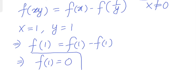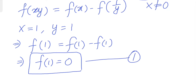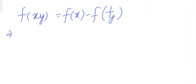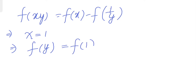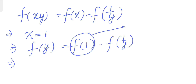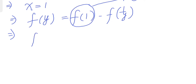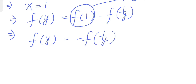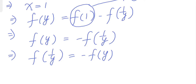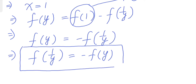This is very surprising — we may need this later, so let's call it equation 1. Now let's try something else: take only x equals 1 in the original equation. We get f of y equals f of 1 minus f of 1 over y. Since f of 1 equals 0, this gives us f of y equals minus f of 1 over y, or equivalently f of 1 over y equals minus f of y. Let's keep this as equation 2.